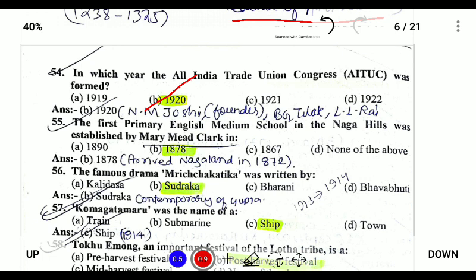The first primary English medium school in the Naga Hills was established by the American Baptist missionaries in 1878. They arrived in 1872 and left in 1911.